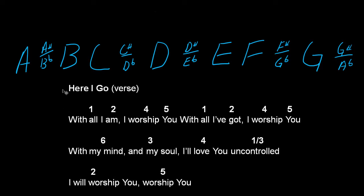The next thing you need to do is determine what key you want to write this in. One of the benefits of writing it in the numbered chart like this is you can play it in all 12 keys. However, typical chord charts are written in a specific key, so it's kind of limiting. But if you have people who don't know how to read numbers, just go the extra mile and write it in a typical chord chart in the key that you want to play.